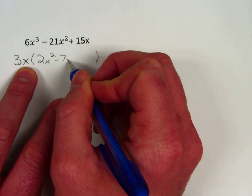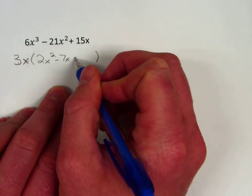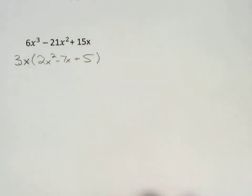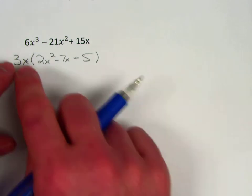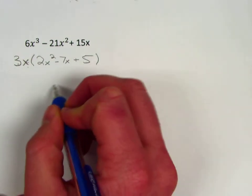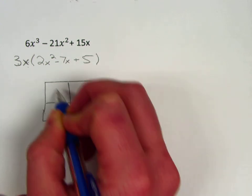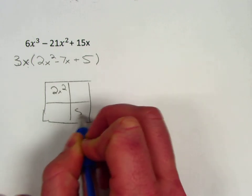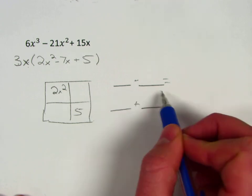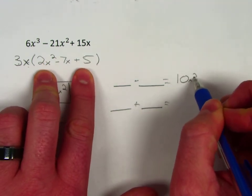What's left in my parentheses is—okay, 3x times what gives me 6x³? 3x times what gives me negative 21x²? And 3x times what gives me 15x? And so this trinomial left in parentheses is what we're actually trying to factor. I'm going to ignore the 3x for a while until the end. I'm going to make sure and attach that to my answer, but I'm factoring this trinomial. So I go back to my box.